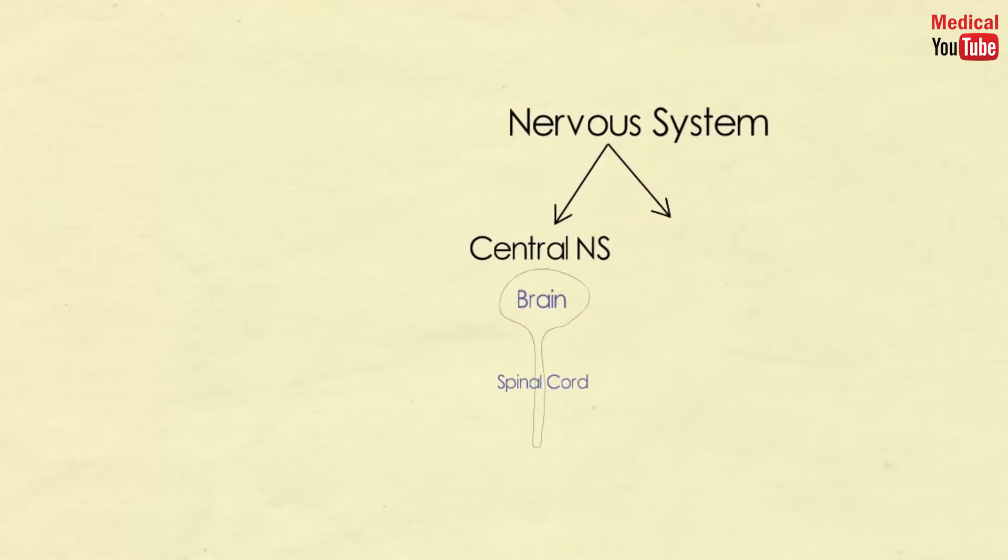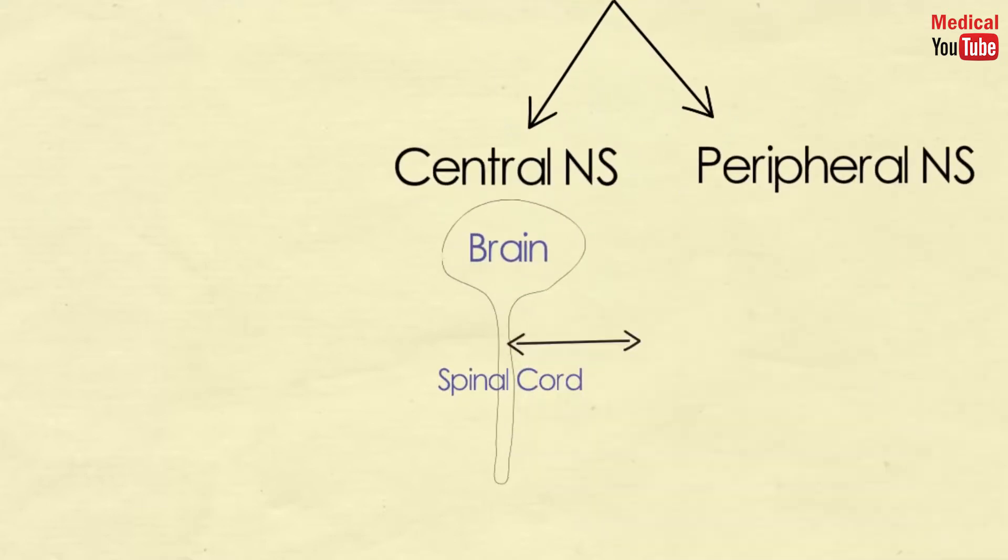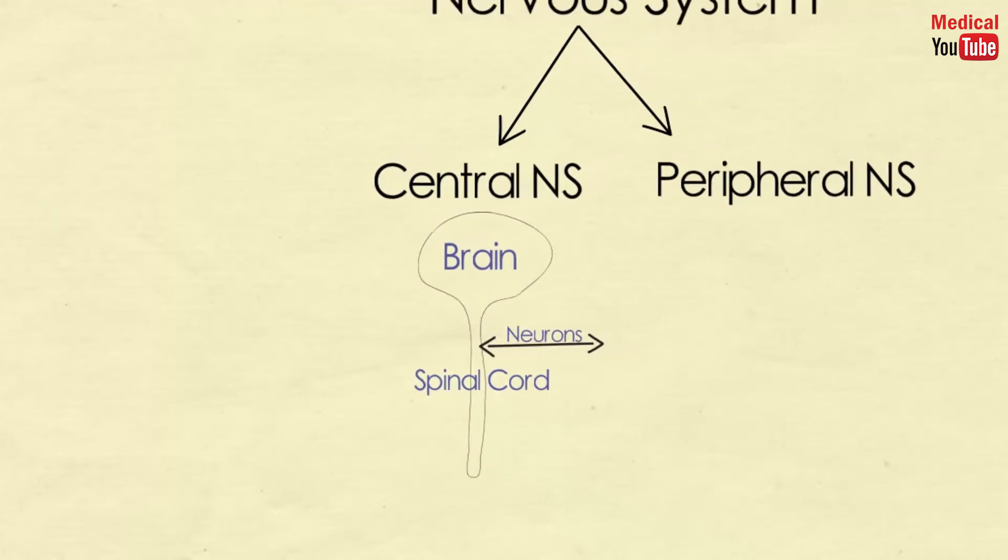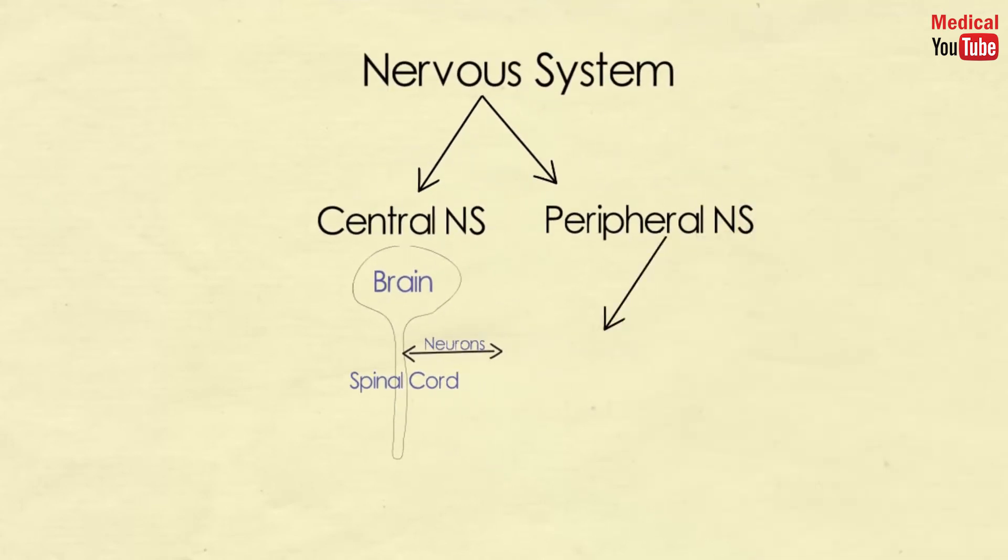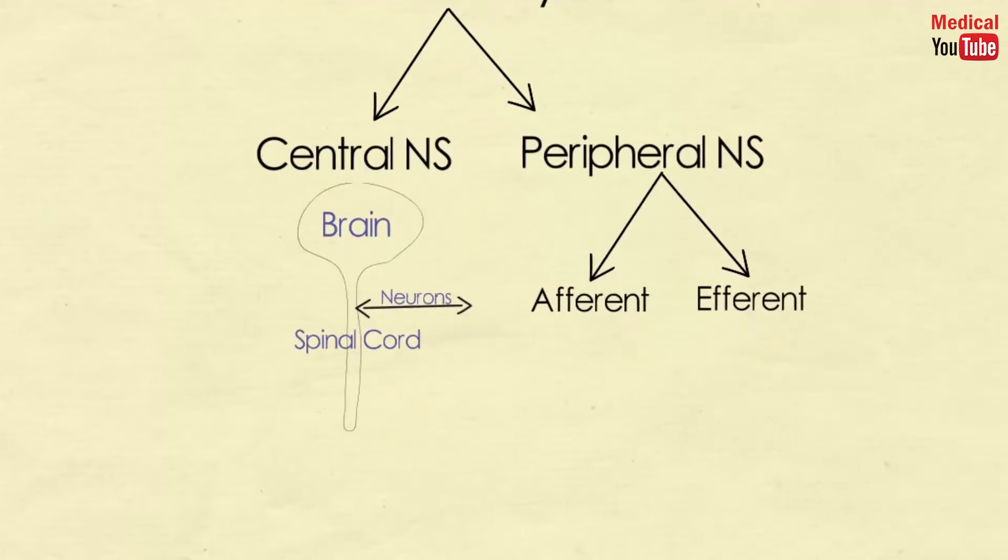And the peripheral nervous system, which includes neurons located outside the brain and spinal cord. That is, any nerves that enter or leave the CNS. The peripheral nervous system is subdivided into the efferent and afferent divisions.